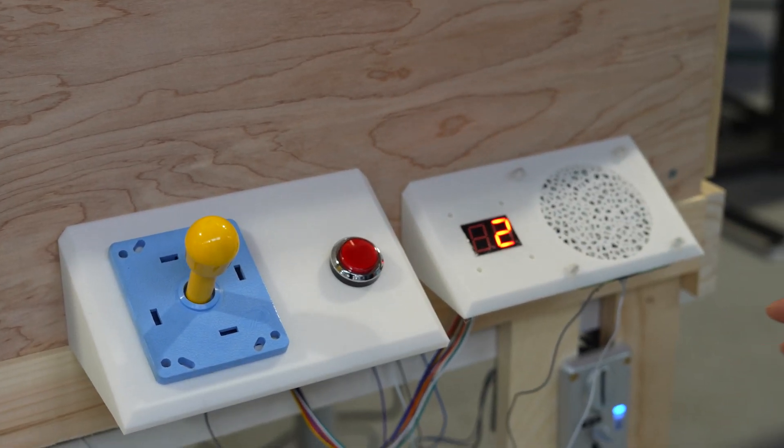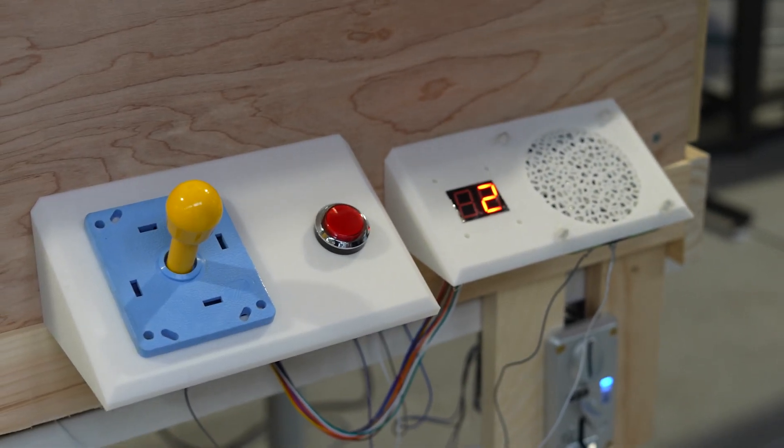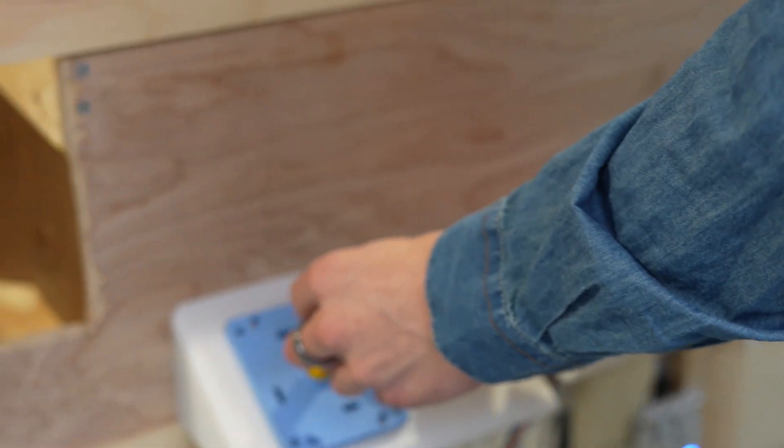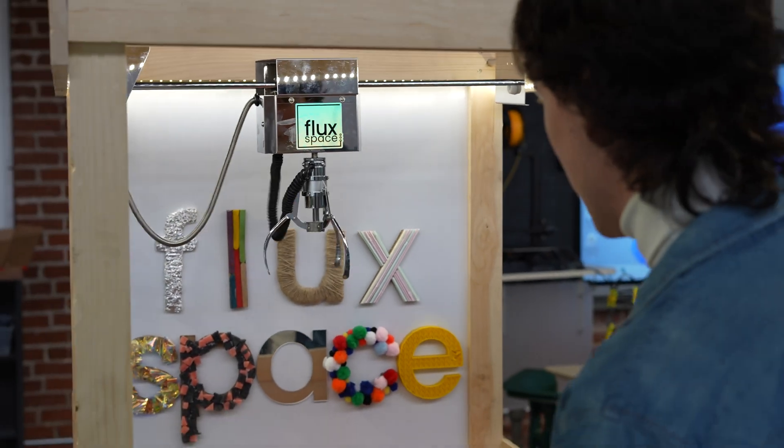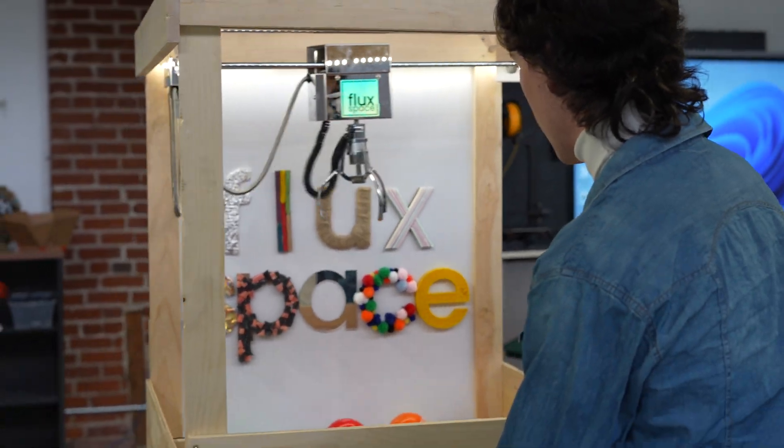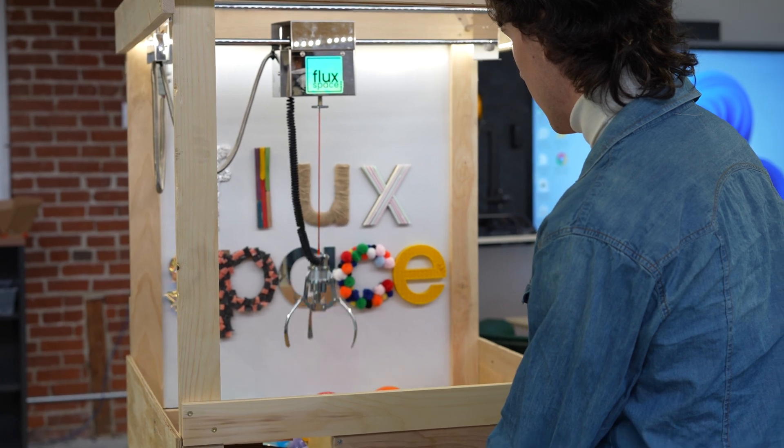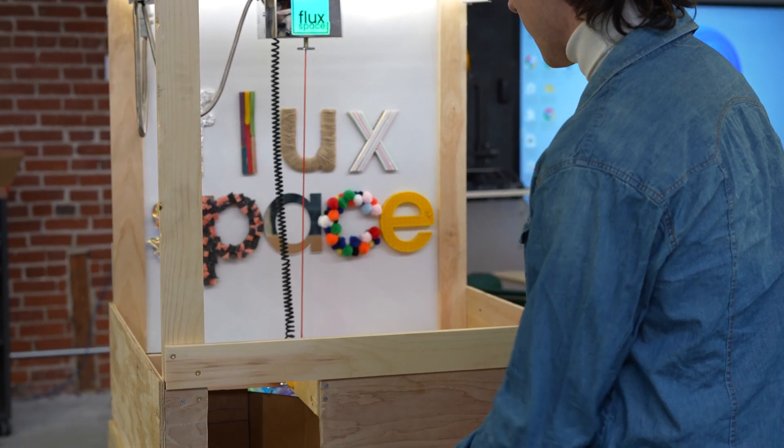So you can see our LED display now shows two. This is because I have the machine set up to take two plays per coin and we can grab our joystick, move it around. Nice.